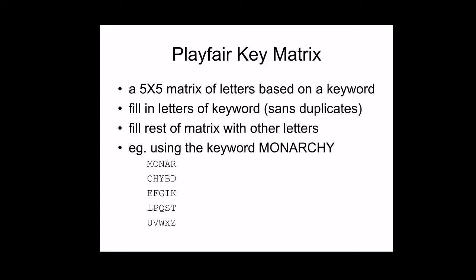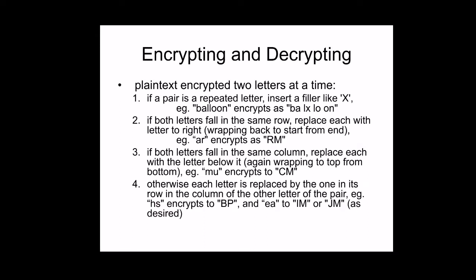There are four rules to follow. Rule 1: Take the plaintext, for example 'balloon,' and split it into pairs of characters — B-A, L-L, O-O, N. If a pair has the same alphabet, insert a filler letter X. So L-L becomes L-X, then L-O and O-N. If the last pair is incomplete, fill it with X as well.